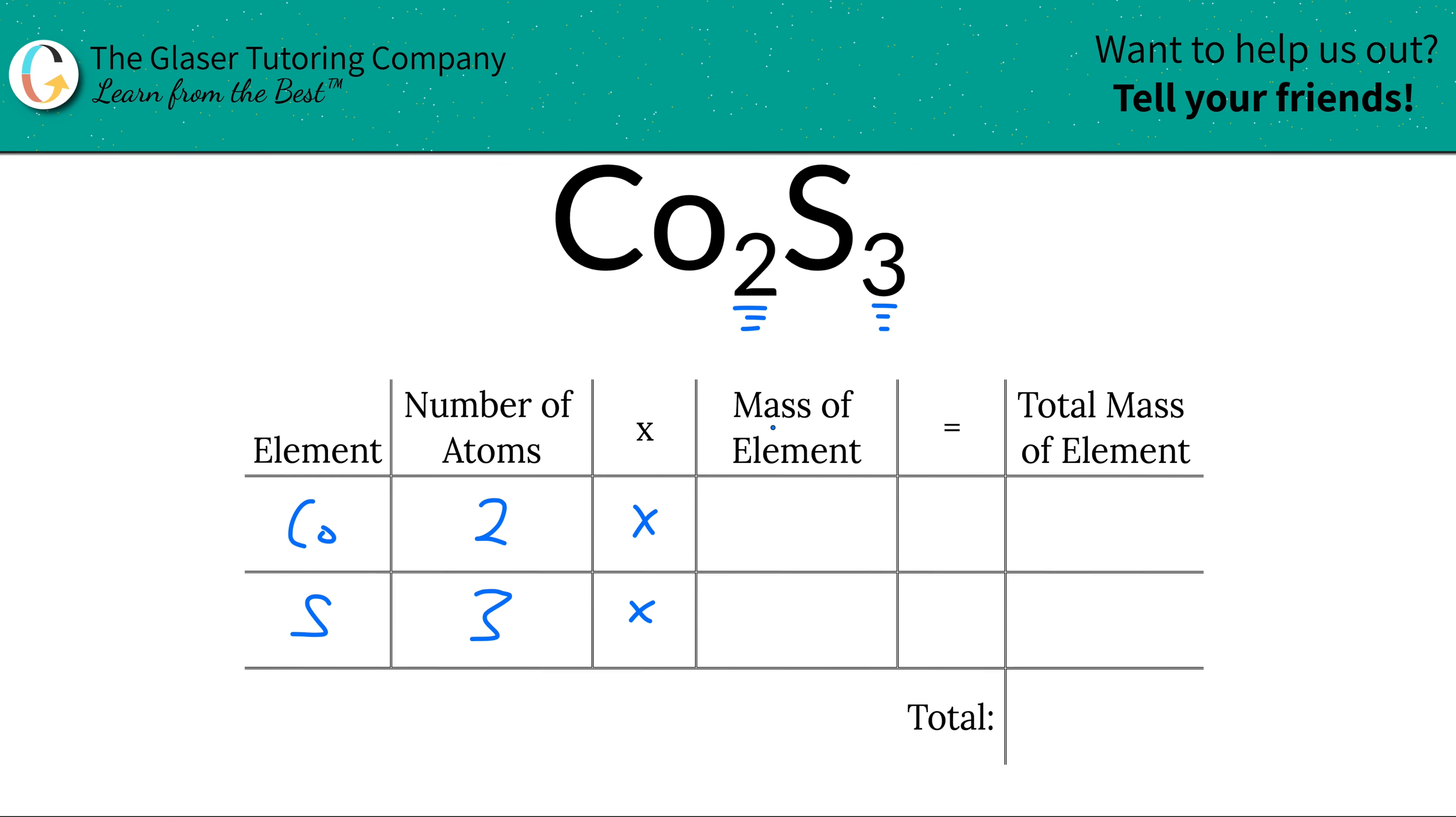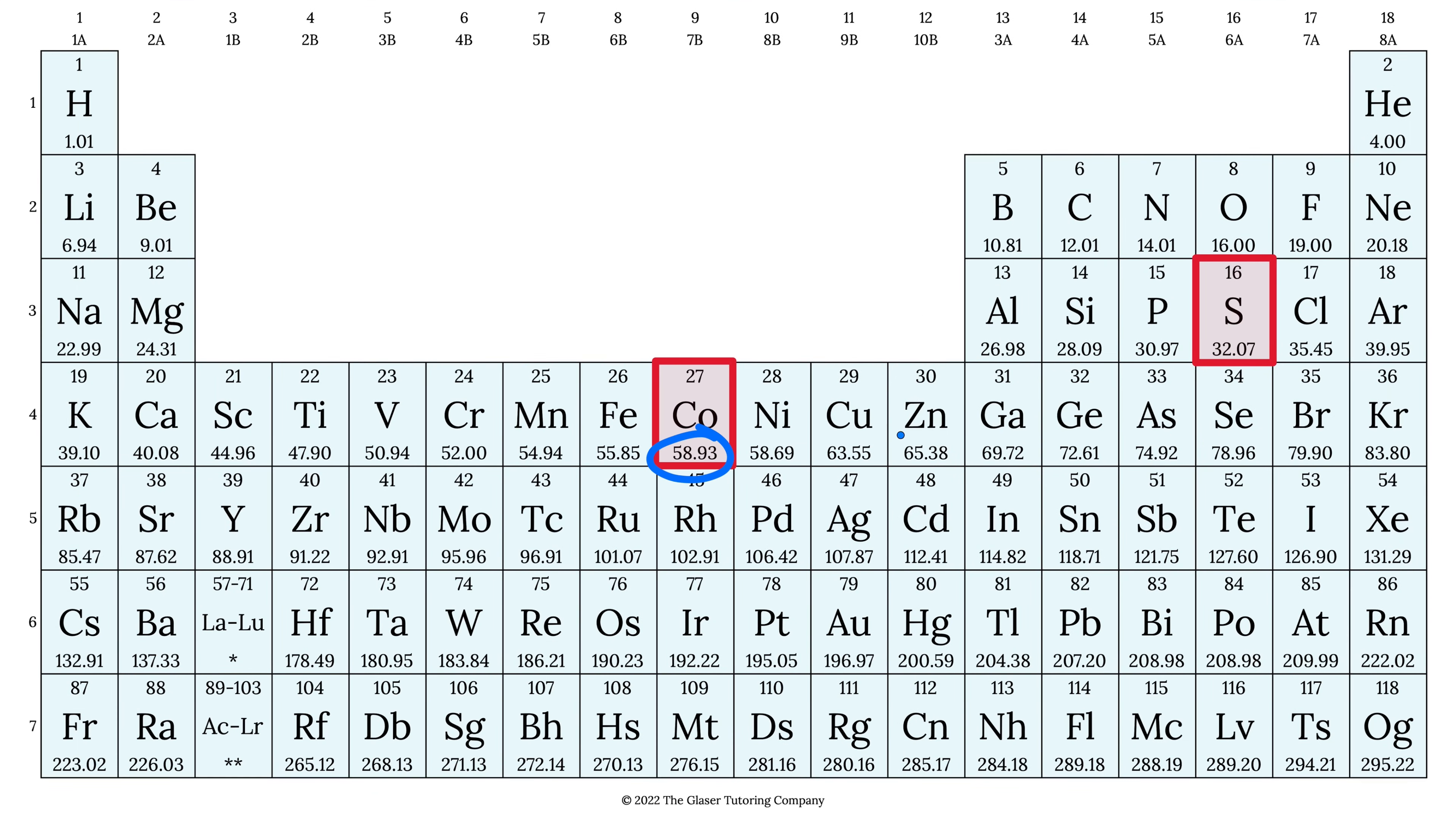So the mass of the element is found on the periodic table. So let's take a look. Cobalt here is 58.93, and sulfur here is going to be 32.07.